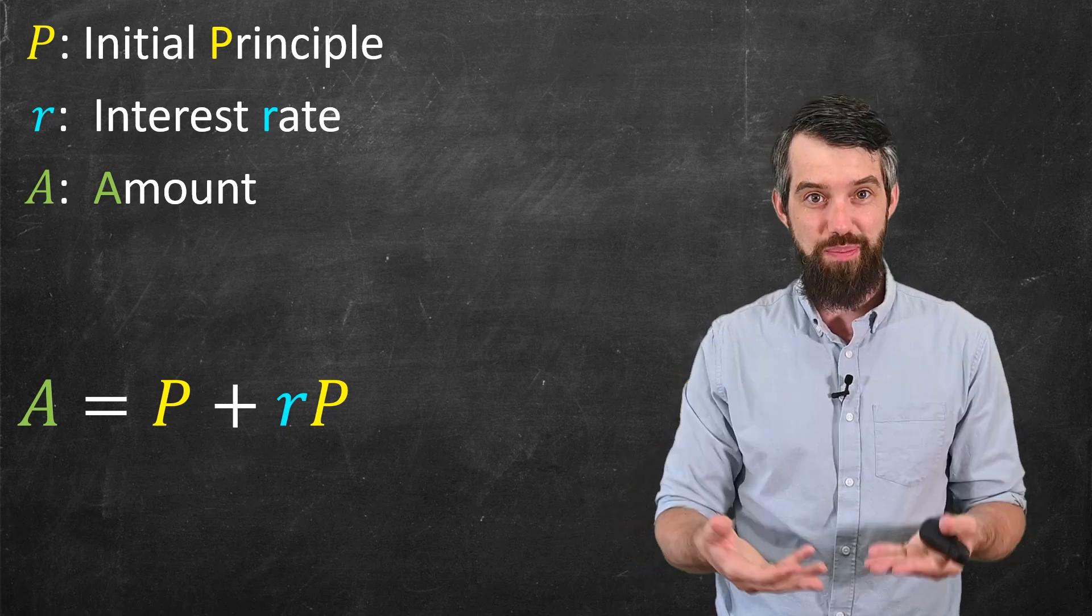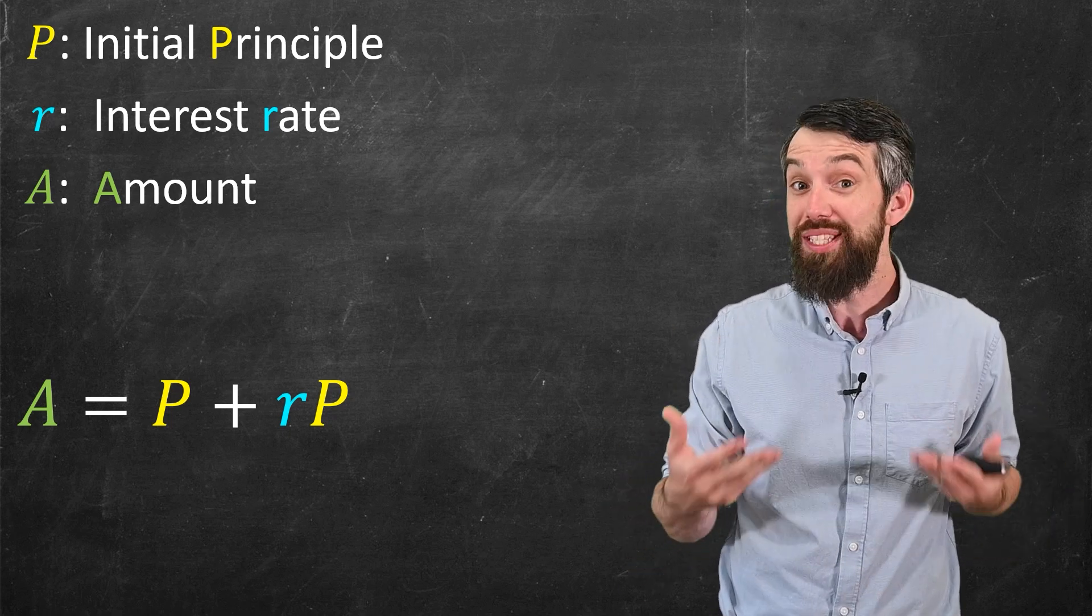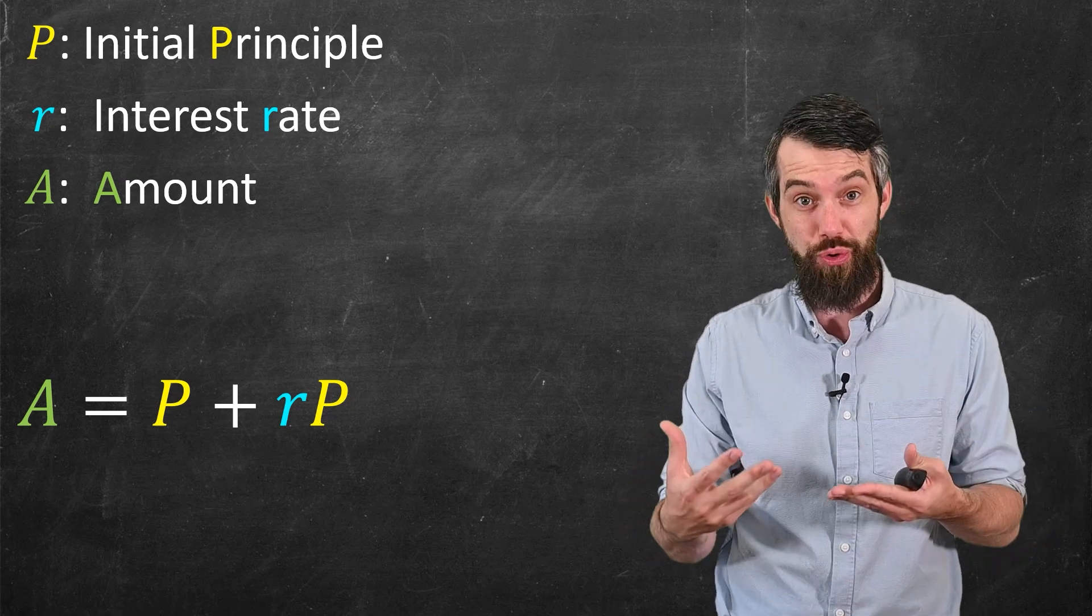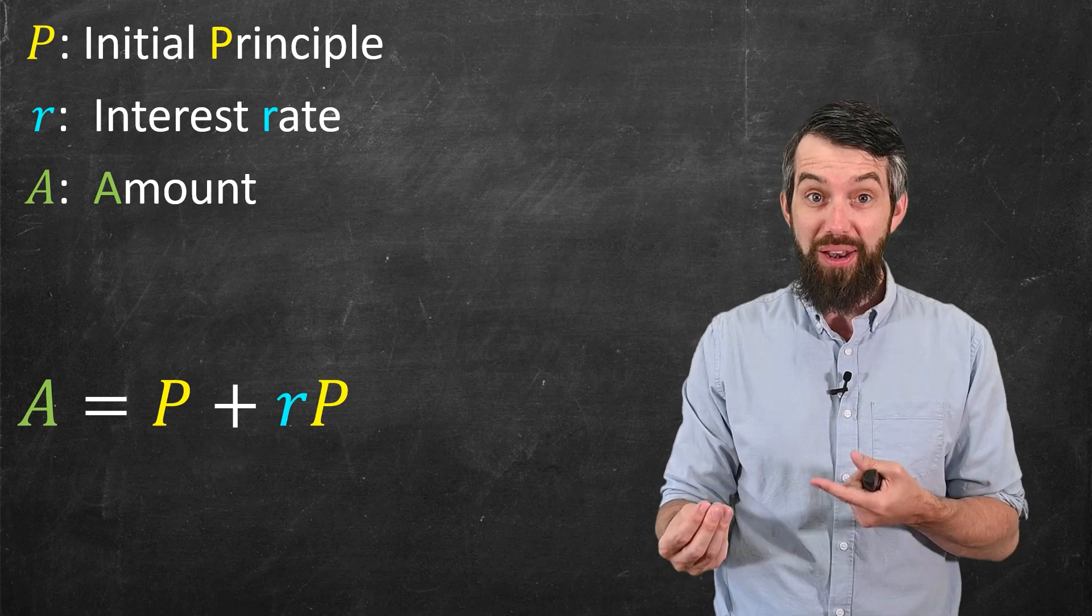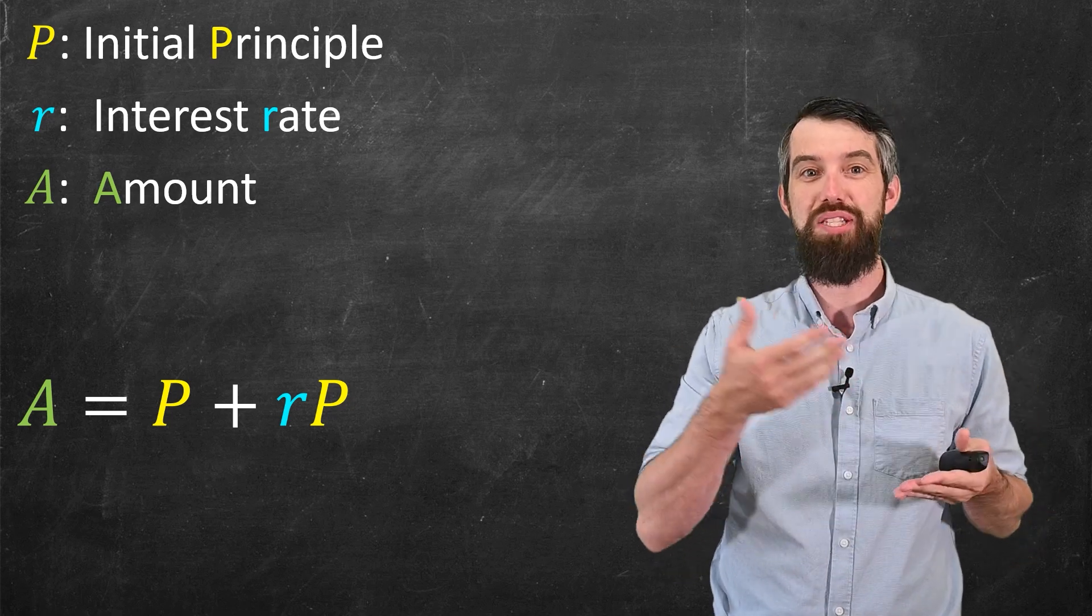So for example, if my interest rate is 10%, then I would get 10% of the principal back as interest in addition to the initial principal. This gives me the final answer that I would get back P plus rP.